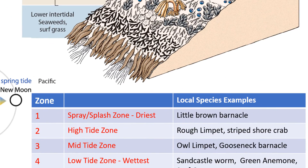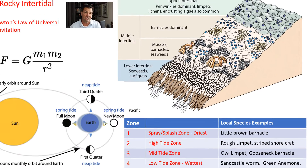There are four intertidal zones. Zone one is also called the splash or spray zone — the driest one, which does not get wet unless it's the highest high tide, so most of the time it's like dry land. Zone four is the low tide zone — the wettest — which is always underwater unless it's the lowest low tide. Examples of specimens found there include the little brown barnacle, rough limpet, owl limpet, sandcastle worm, green anemone, and surfgrass — all found in our intertidal zones.